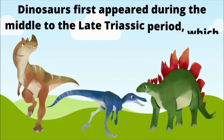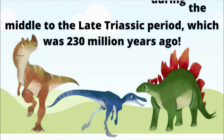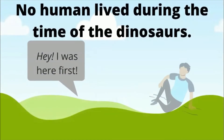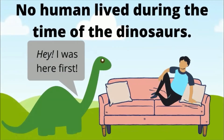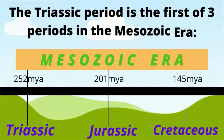Dinosaurs first appeared during the middle to the late Triassic period, which was 230 million years ago. No human lived during the time of the dinosaurs. The Triassic period is the first of three periods in the Mesozoic era: the Triassic, the Jurassic, and the Cretaceous.